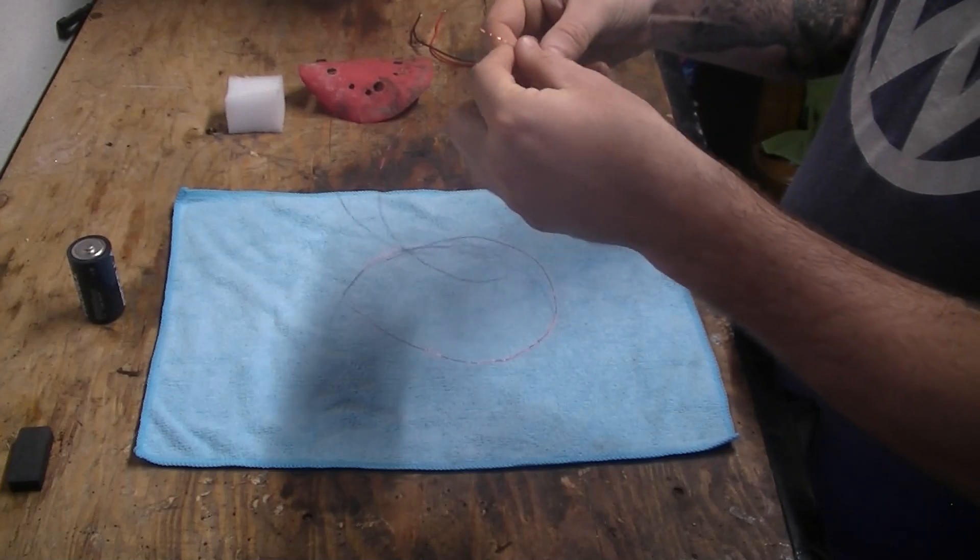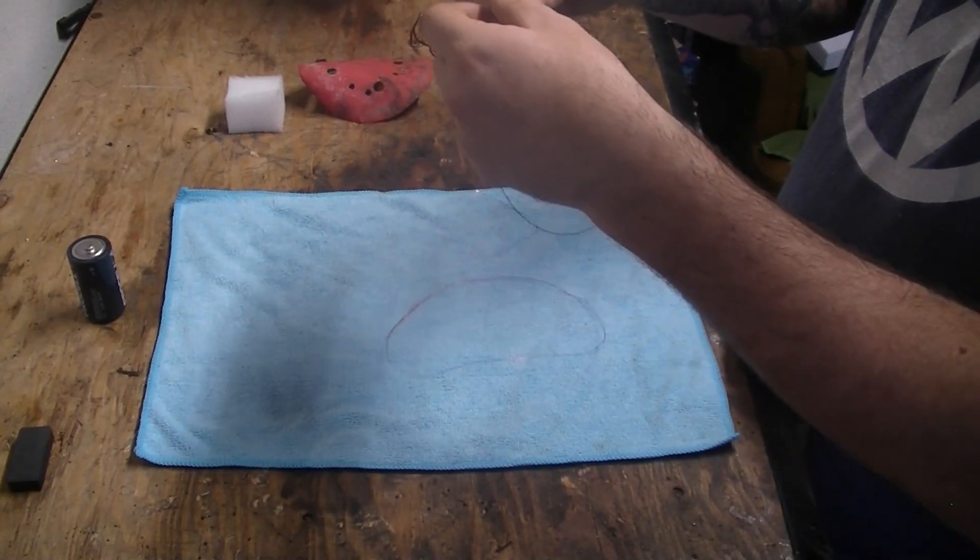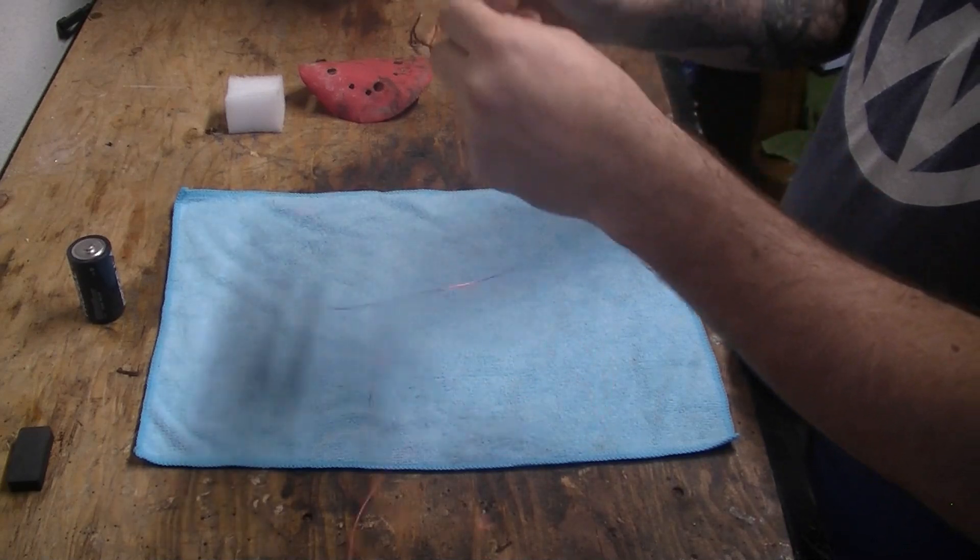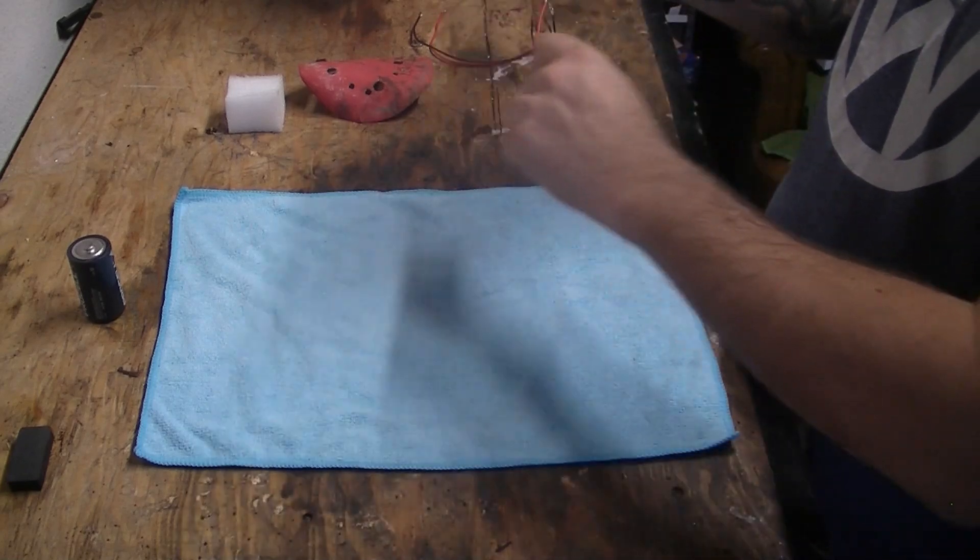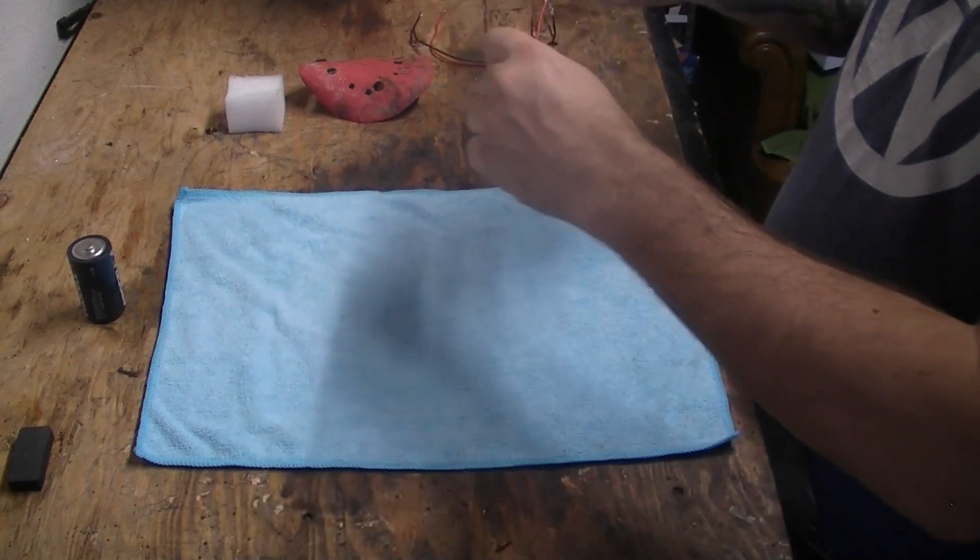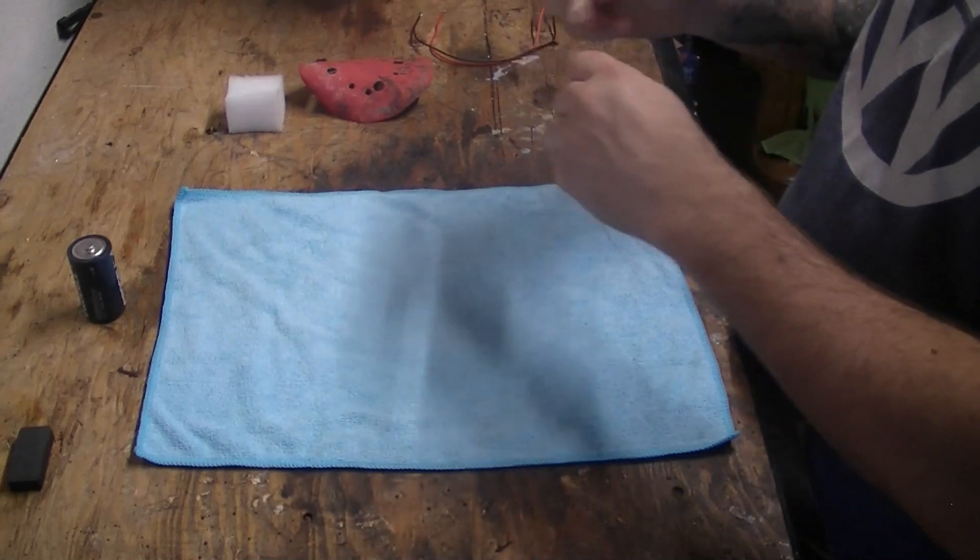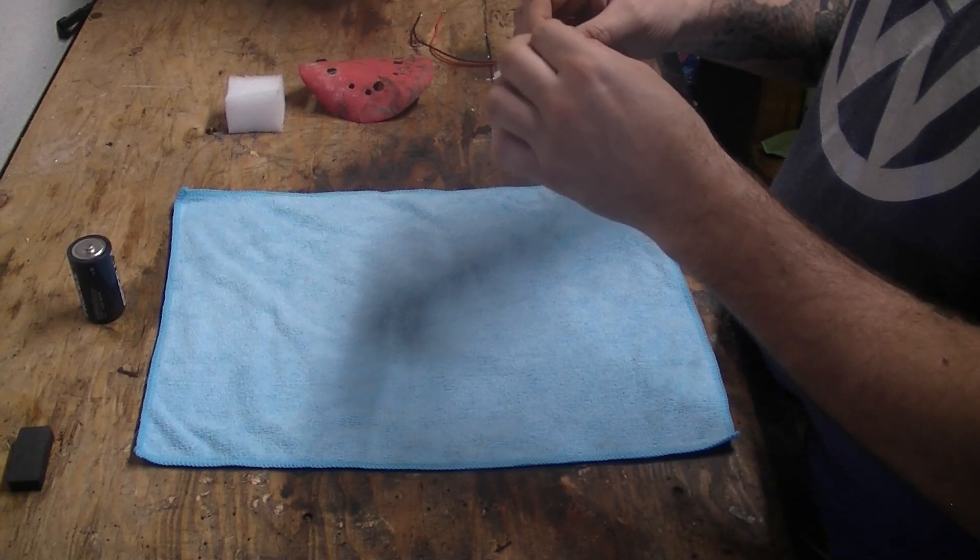So coil, start with, you're going to want to leave yourself a nice little bit off the end there, which you can always tuck in a little bit later, and you're going to use your straw. You're going to wrap this around your straw real nicely. So here I go. Twisting around the straw. There we go, alright.